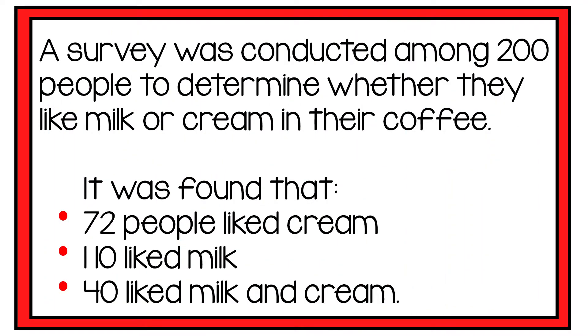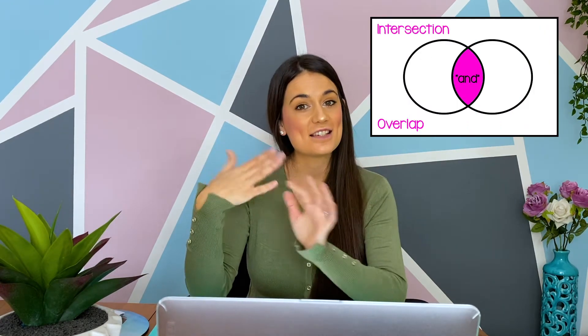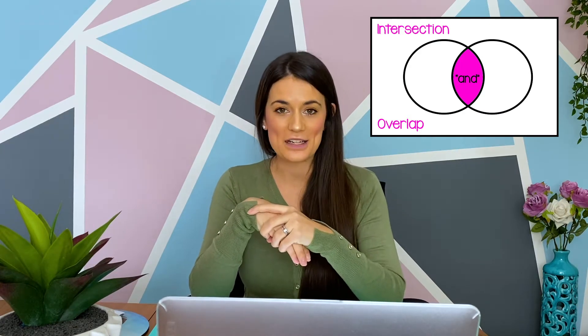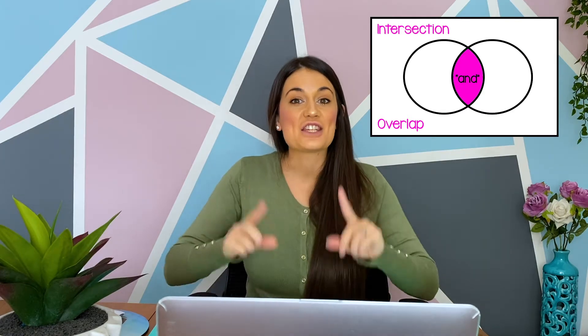A survey was conducted amongst 200 people determining whether they like milk or cream in their coffee. 72 like cream, 110 like milk, and 40 like milk and cream. When you're drawing a Venn diagram you need to decide whether your circles are going to overlap or not. They overlap if there's an intersection, something in common, or an 'and'.